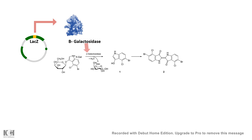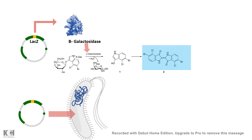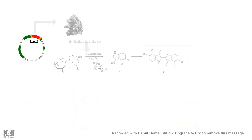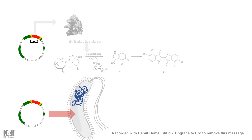If bacteria are transformed with a plasmid containing lacZ as a screenable marker, the bacterial colony will be blue in color because active beta-galactosidase converts X-gal to a blue product. However, if the gene of interest is inserted in a way that disrupts the lacZ gene, beta-galactosidase production is lost and no blue color forms.